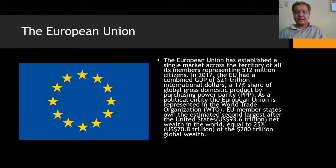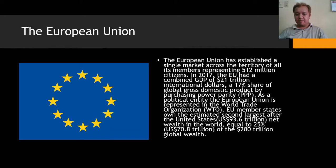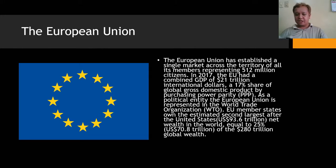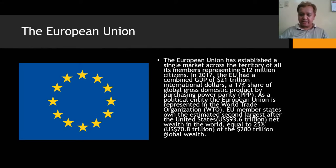The European Union established a single market across the territory of all its members, representing 512 million citizens. In 2017, the EU had a combined GDP of 21 trillion international dollars, representing 17 percent of global gross domestic product by purchasing power parity. As a political entity, the European Union is represented in the World Trade Organization.